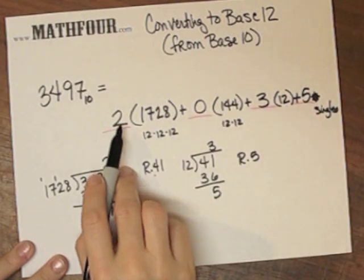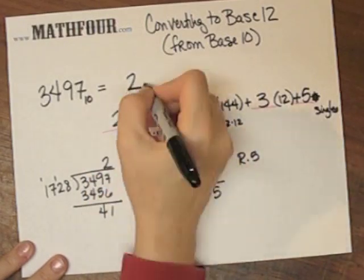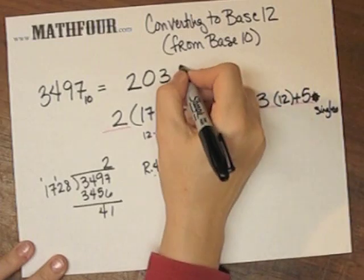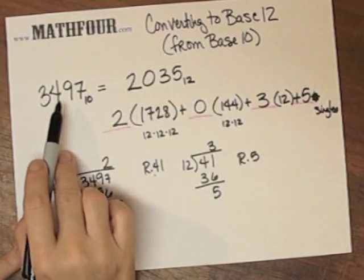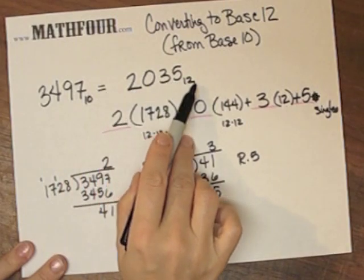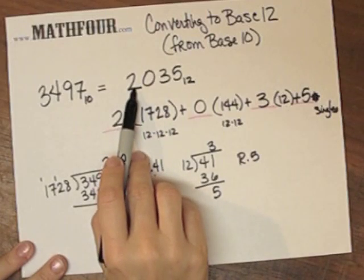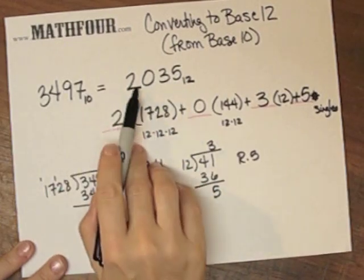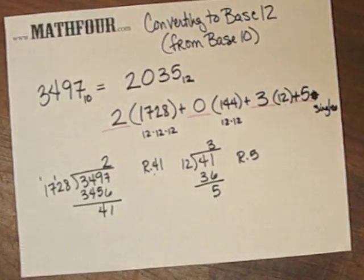This represents 2 sets of 1728, 0 sets of 144, 3 sets of 12, and 5 singles. So this is our number base 12. 3,497 base 10 is 2,035 base 12. Remember not to pronounce this as two thousand thirty-five, because that implies a base 10 system. 2,035 base 12. And that's how to convert to base 12 from base 10.